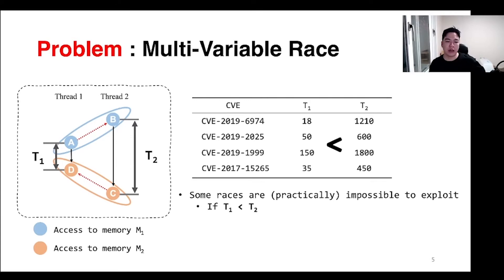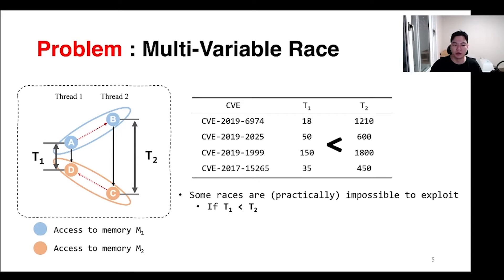And there are two time windows between the four instructions. The case we found is that time window 1 is smaller than time window 2. At this point, the bug must be executed in the order A, B, C, and D. But the time window is fixed, making it impossible to exploit with brute force.